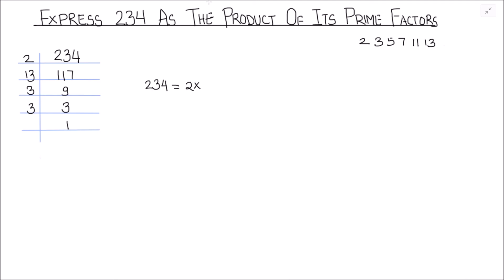This is how you can express any number as the product of prime factors by prime factorization method. Here we see that all the numbers written in the product of 234 are prime numbers. So this is how you can express any number as the product of its prime factors.